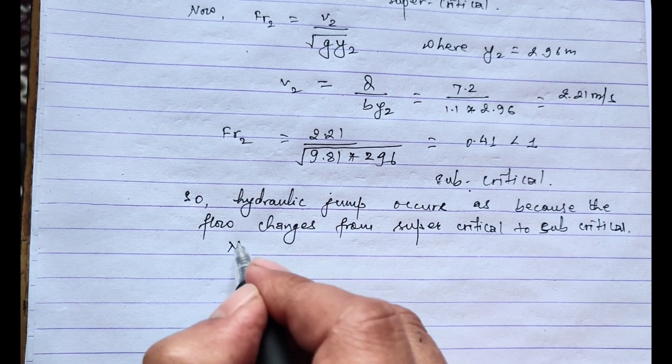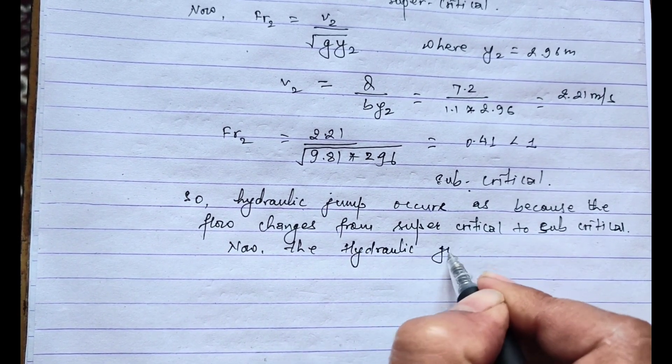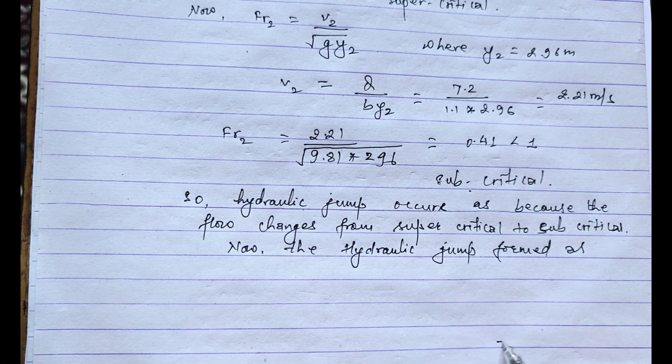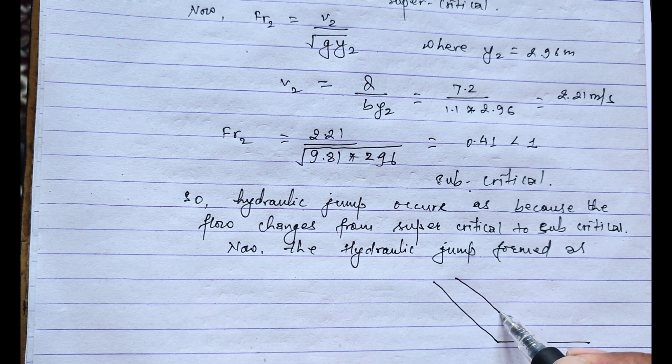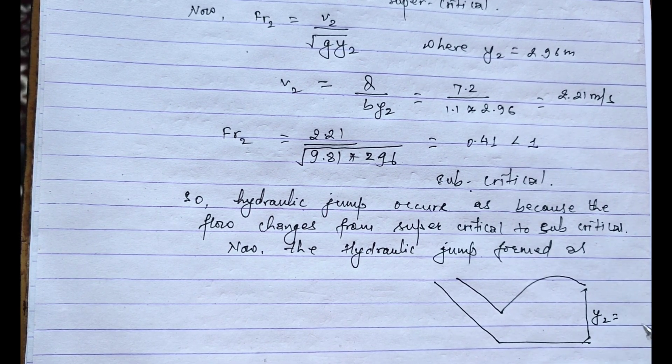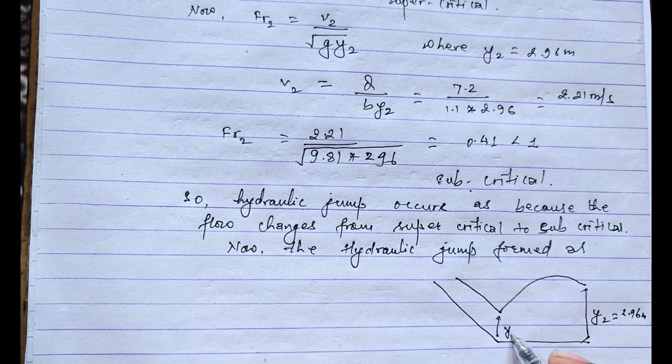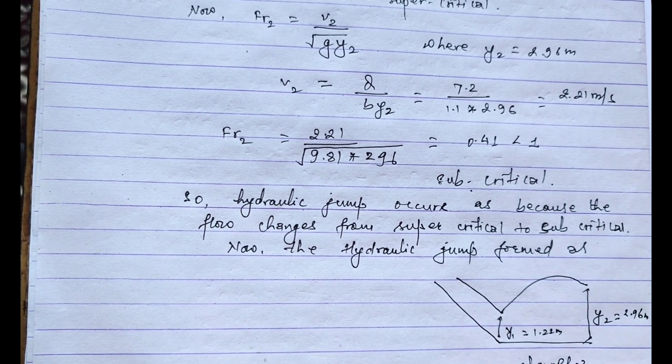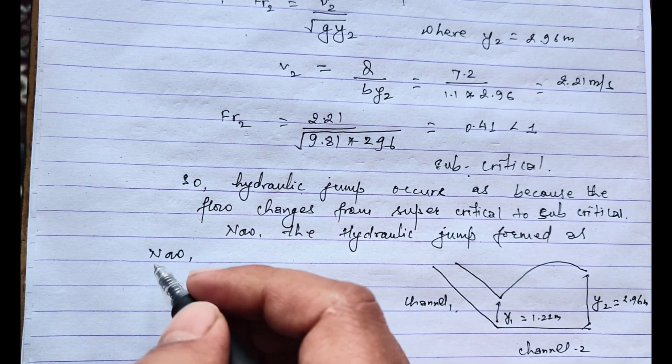Now the hydraulic jump is formed as well. This one is channel 2 and this one is channel 1. Now the flow comes this way at channel 2. This one is y2 equals 2.96 meters, and this one is y1 equals 1.22 meter.